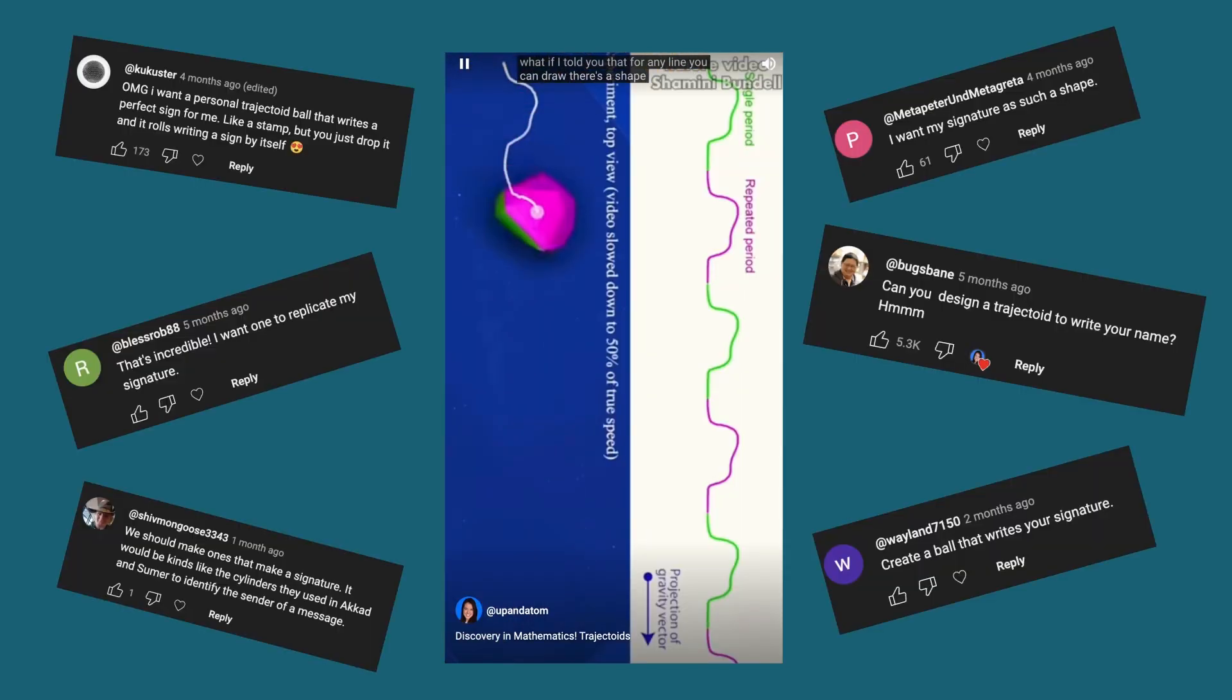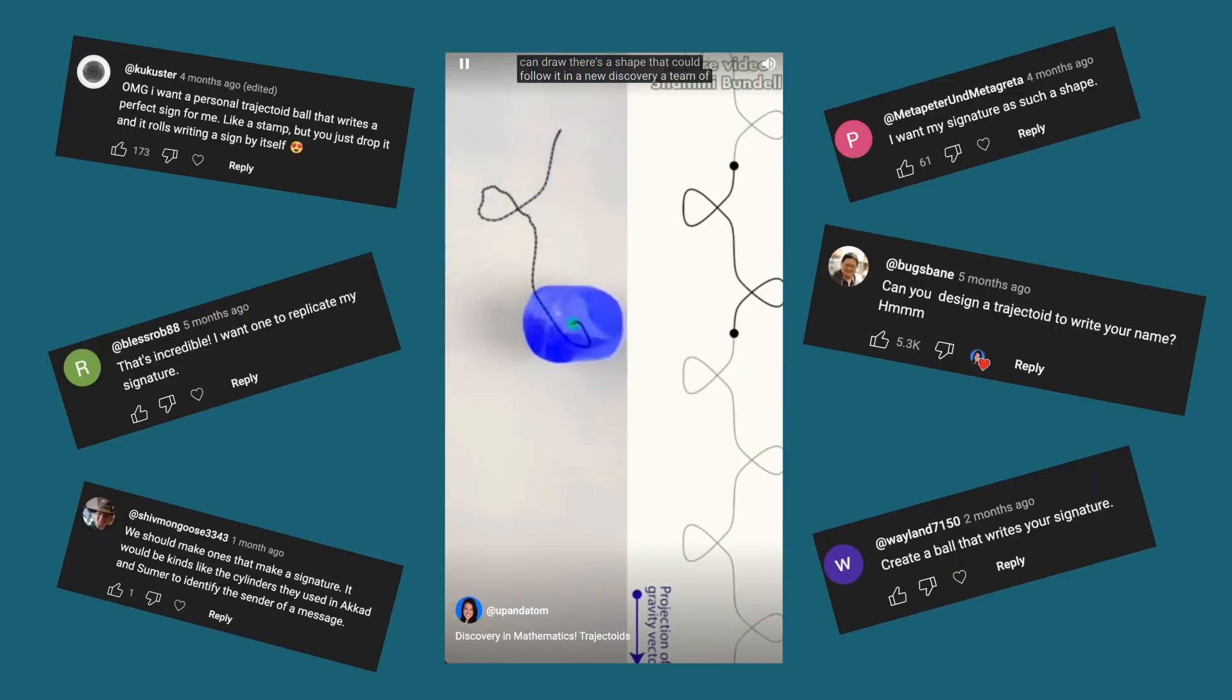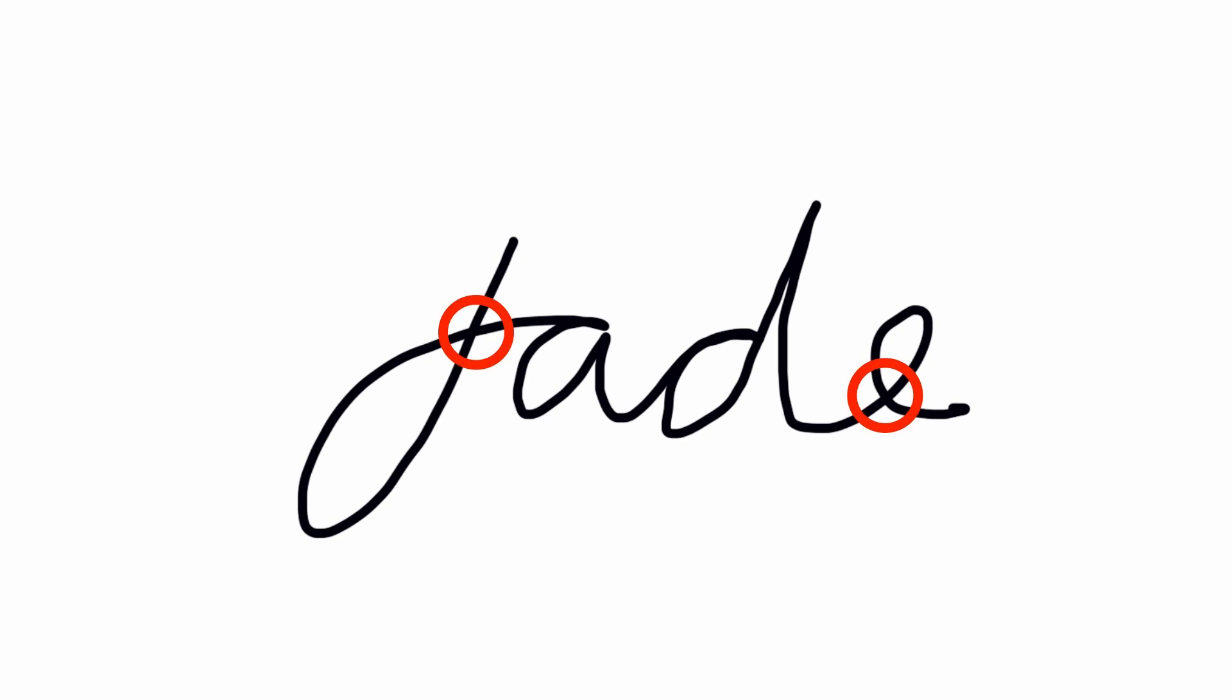I uploaded a YouTube short about trajectoids last year, and a lot of you suggested making one that traces out a signature or a name. But unless it doesn't have self-intersections, go back uphill, or have sharp turns, it probably won't work in practice.